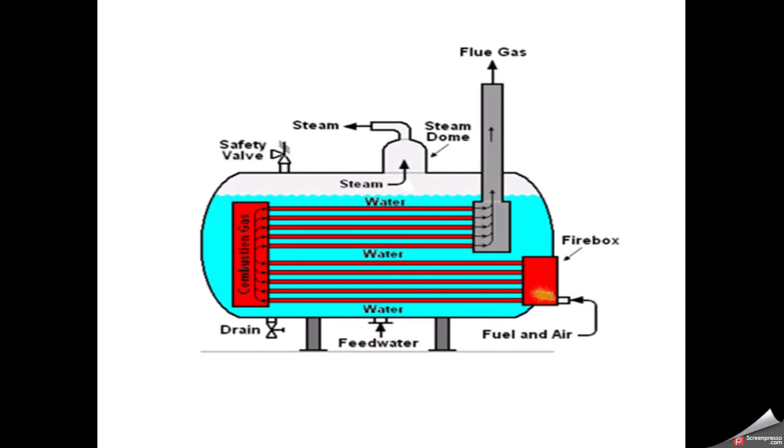This is the diagram. You can see these are the tubes shown by red color, and the other color is water. Fuel and air come here, this is firebox. Heat is produced and moves through these tubes and heats the water present in the tank. Then it goes out as flue gas from the exhaust. Feed water comes in the tank from these sides.